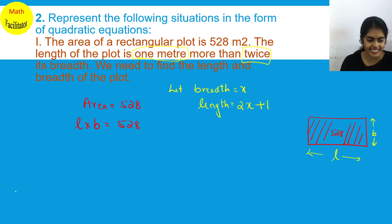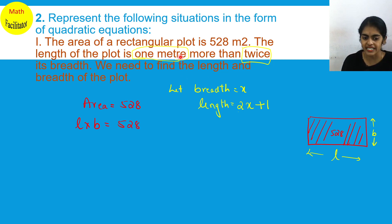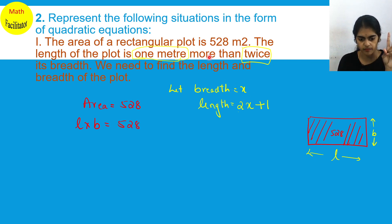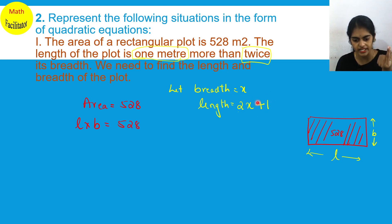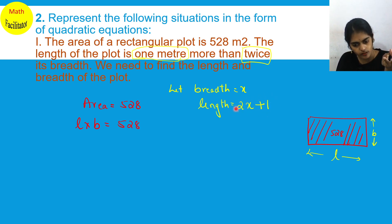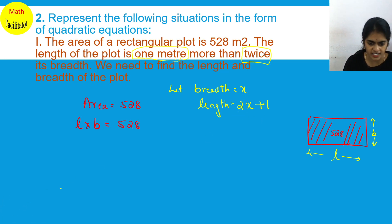The condition given is: the length of the plot is 1 meter more than twice its breadth. If breadth is taken as X — because length and breadth are compared here — then length is 1 more than twice the breadth, which means 2 times X plus 1. So length is 2X plus 1 and breadth is X.